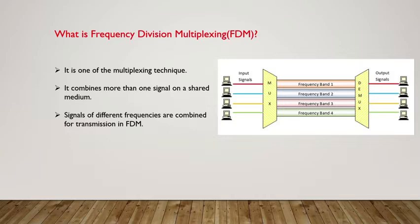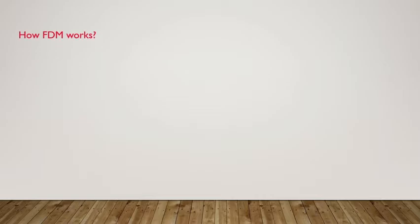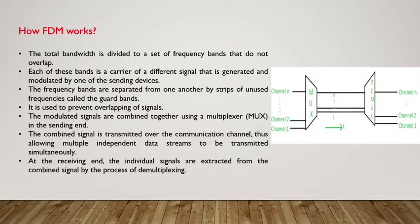Now, how FDM works: the total bandwidth is divided into a set of frequency bands that do not overlap, so you can get a clear signal. Each of these bands is a carrier of a different signal that is generated and modulated by one of the sending devices. The frequency bands are separated from one another by a strip of unused frequency called guard bands, which prevents signals from mixing and overlapping.